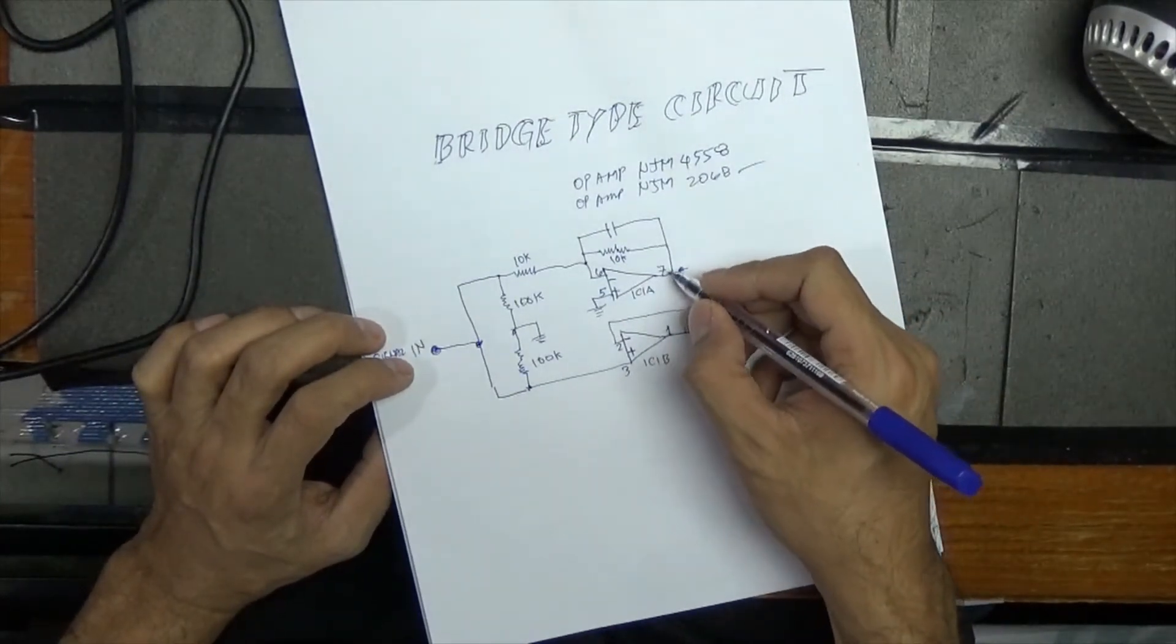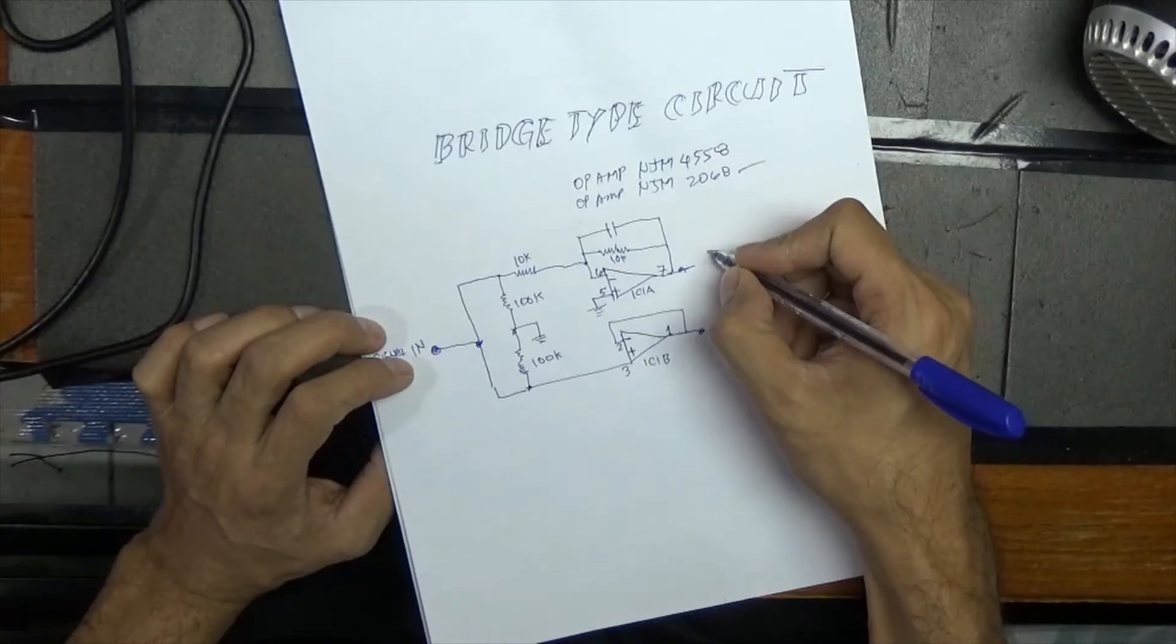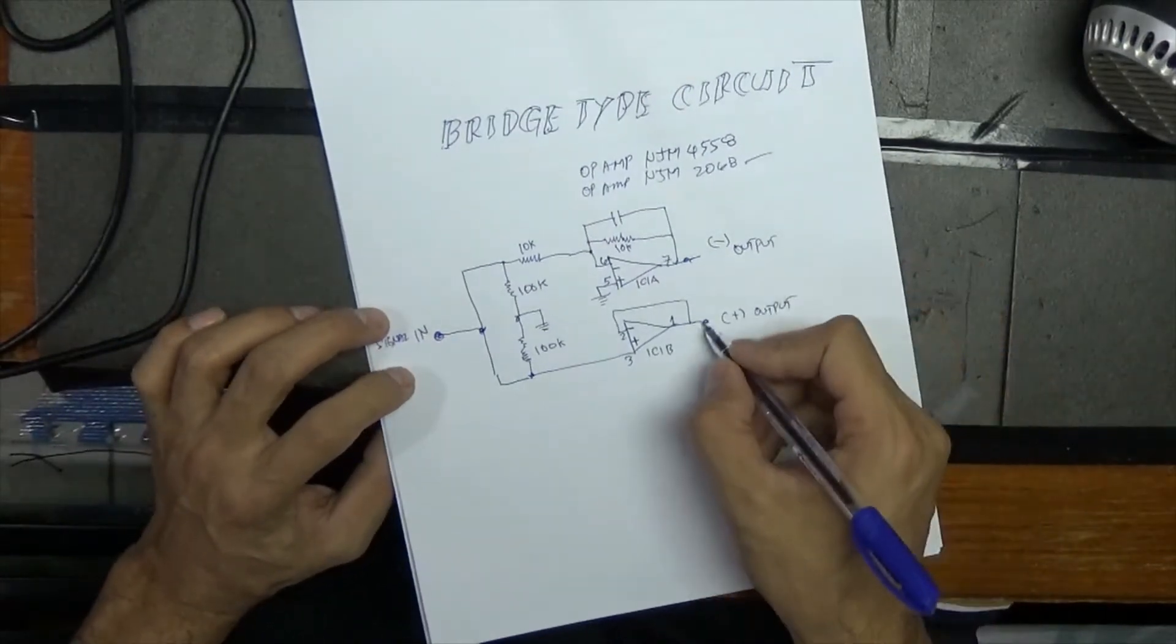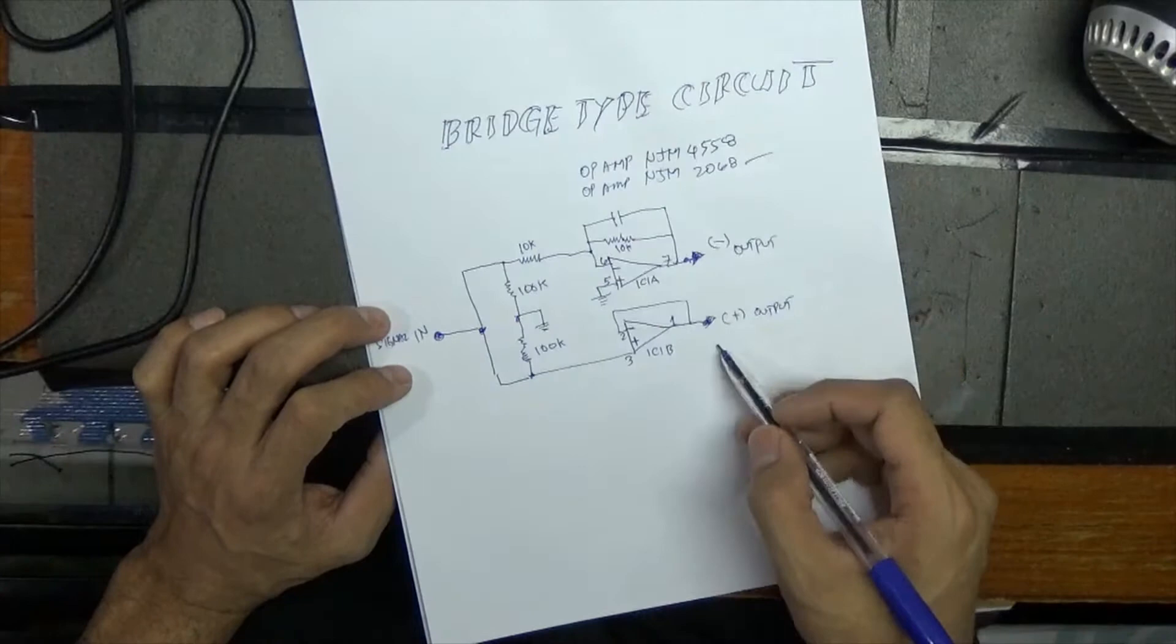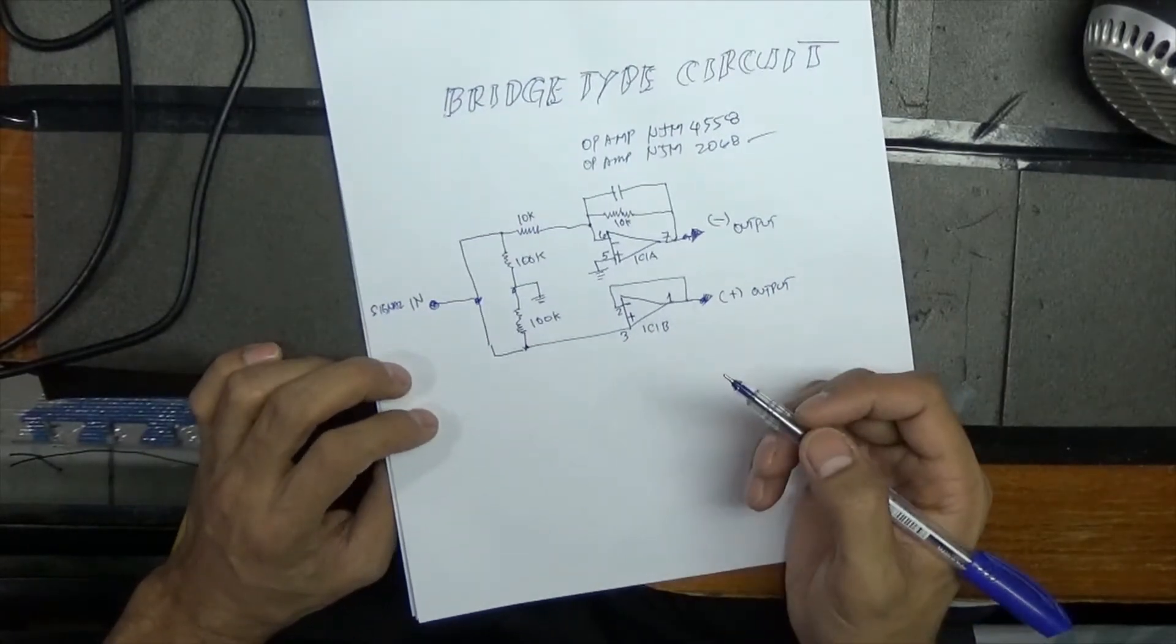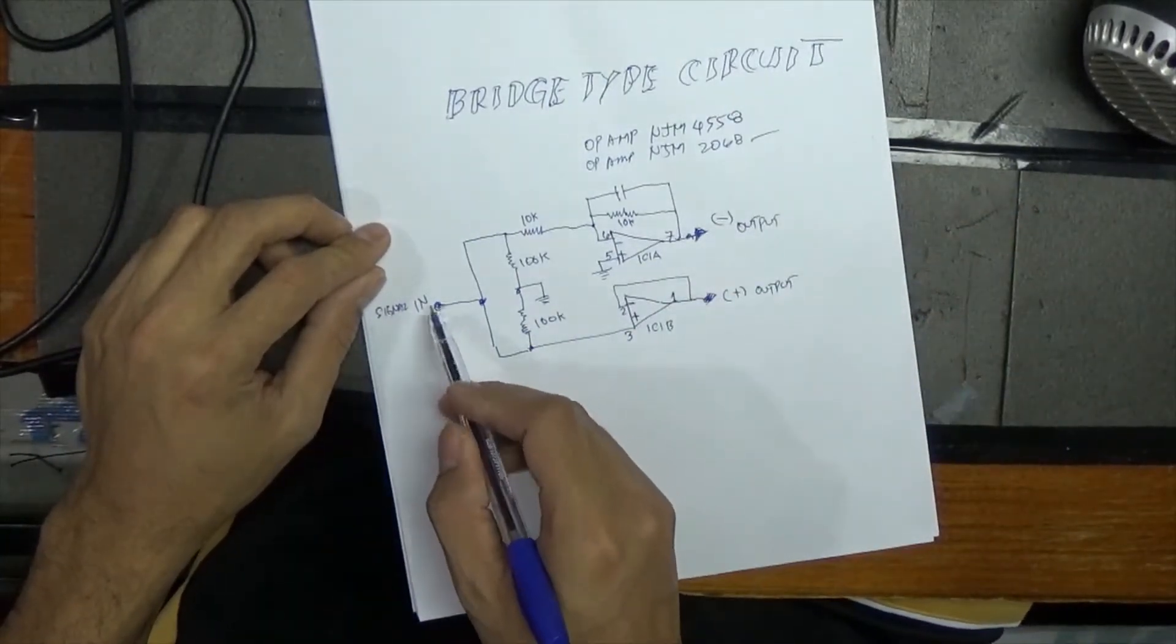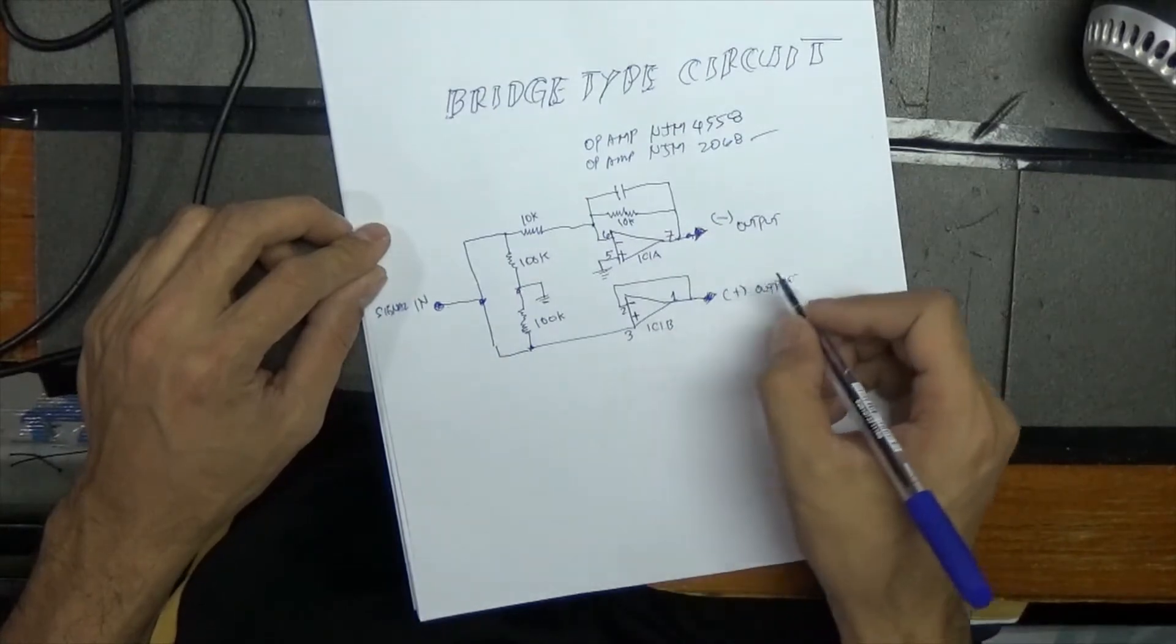Pin number seven is output, and pin number one is also output, but this one is negative output. This one is positive output. So you have one input signal and you have two output signals, which is negative and positive, and the ground.